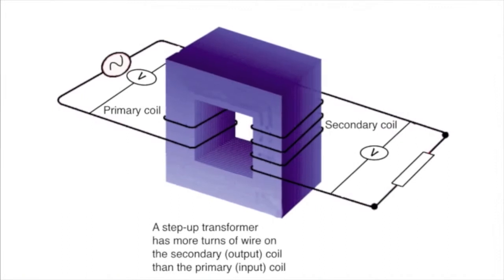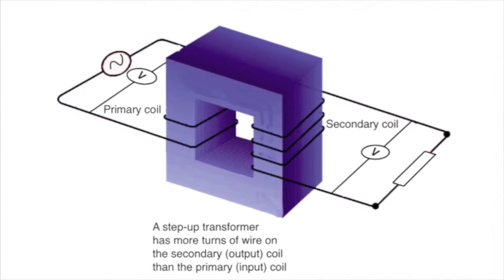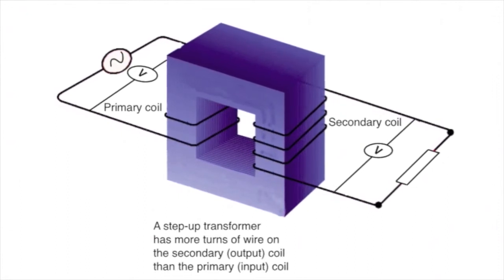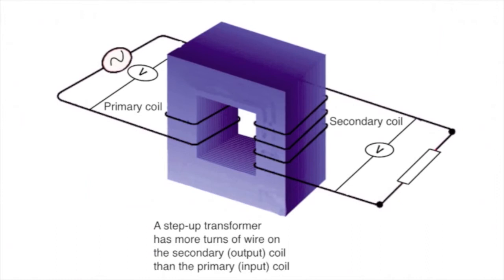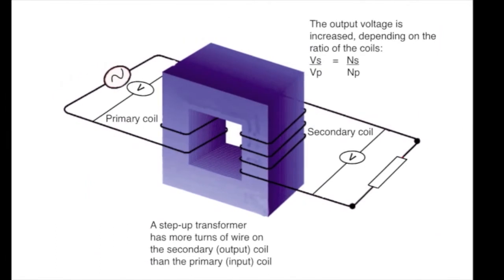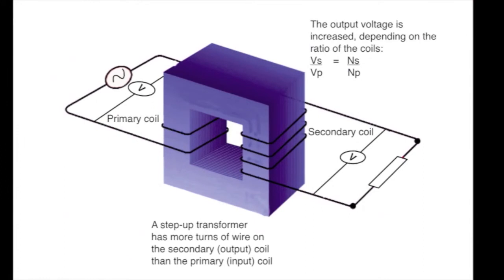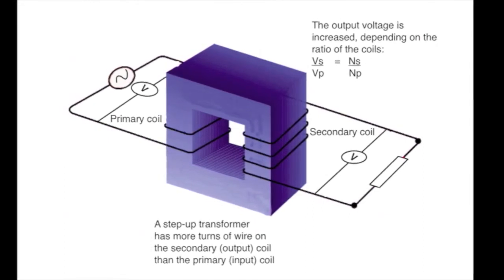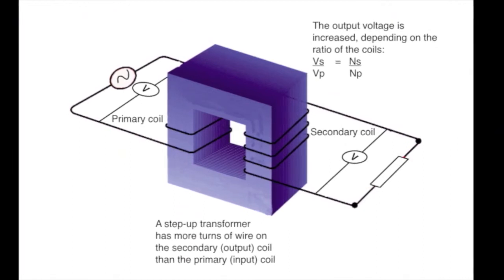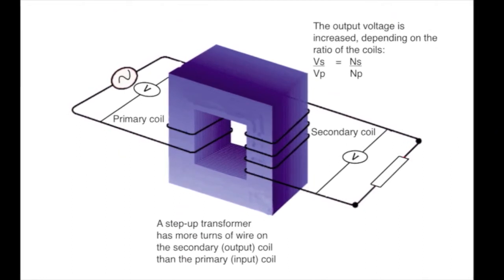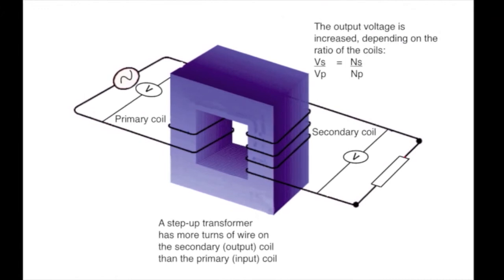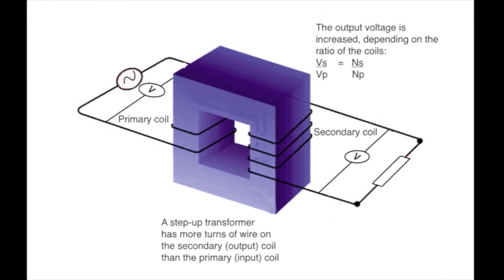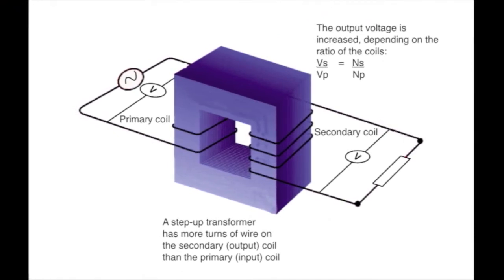A step-up transformer has more turns of wire on the secondary, or the output coil, than it has on the primary coil. Working out the way the voltage changes is fairly straightforward. If it has twice as many turns on the secondary as the primary, the voltage has doubled. Four times as many turns, the voltage is four times. Nineteen times as many turns, the voltage is nineteen times. In other words, the ratio of the input voltage to the output voltage is the same as the ratio of the number of turns on the coils.